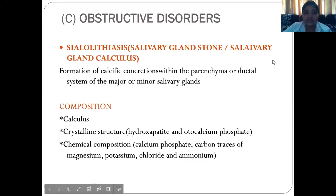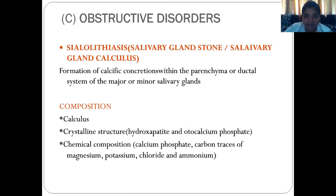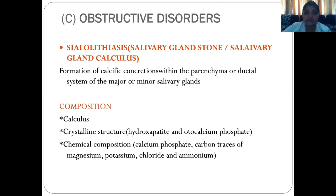Obstructive disorders of salivary glands: sialolithiasis is nothing but a salivary gland stone or salivary gland calculus. Formation of calcific concretions within the parenchyma or ductal system of the major and minor salivary glands is the salivary gland calculus. Calculus is formed usually from a crystalline structure of hydroxyapatite or octacalcium phosphate. The chemical composition of calculus usually contains calcium phosphate, carbonates, potassium, fluoride, and ammonia.